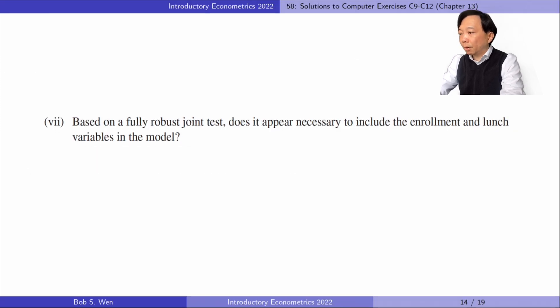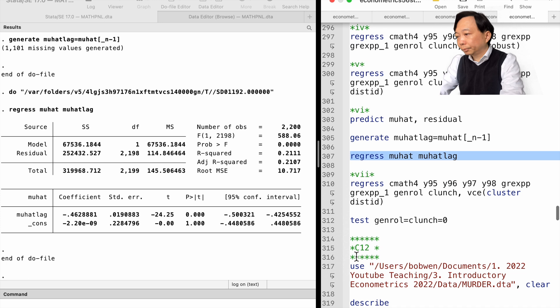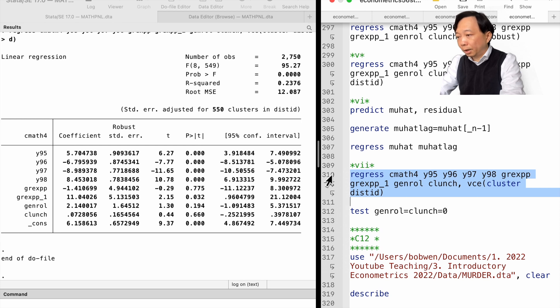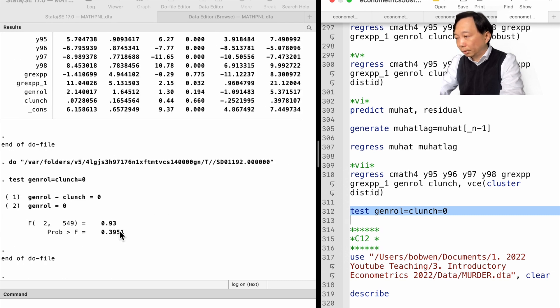In part 7, based on a fully robust joint test, does it appear necessary to include the enrollment and lunch variables in the model? After estimating the first differenced model with the cluster standard errors, we use the test command to do an F-test for the joint significance of the enrollment and lunch variables. The F-statistic is 0.93 and its p-value is 0.4. The two variables are not jointly significant, and we can drop them from the model. But including them in the model as control variables helps reduce the error variance and defend against suspicion of omitted variable bias.